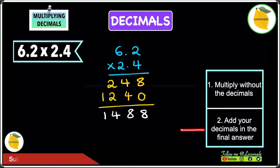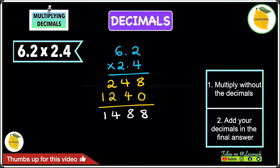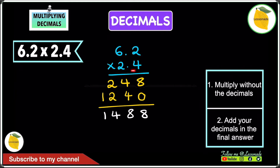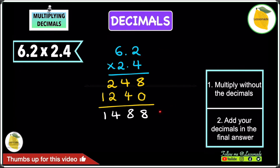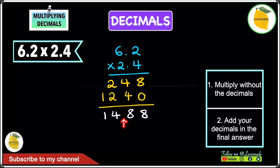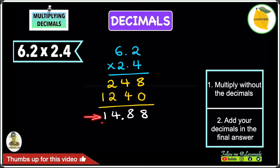The next step is to add the decimals to the final answer of 1488. To do that, we look at the numbers we are multiplying — 6.2 and 2.4 — and count the digits after the decimal point. In 6.2, we have one digit after the decimal. In 2.4, we also have one digit. That gives us a total of two digits, so our answer will have two numbers after the decimal point. Counting from the right: 1, 2 — the decimal point goes between the 4 and the 8, giving us an answer of 14.88.